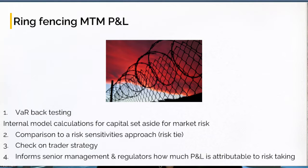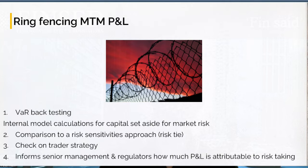For mark-to-market P&L, it's important that we ring-fence it or isolate this P&L and report it separately. There are four reasons why we do that. Number one, you may have heard of the term VAR, or value at risk. This is a model which the bank uses to quantify, given how much risk they're carrying, what the probable losses associated with that risk are. So we need to be able to compare our mark-to-market P&L back to our VAR results.